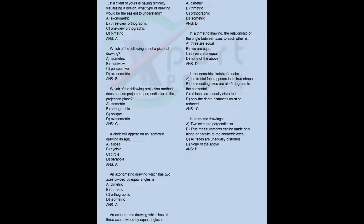An axonometric drawing which has all three axes divided by equal angles is: a) dimetric, b) trimetric, c) orthographic, d) isometric. Answer: D. In a trimetric drawing, the relationship of the angles between axes is: a) three are equal, b) two are equal, c) three are unequal, d) none of the above. Answer: D.